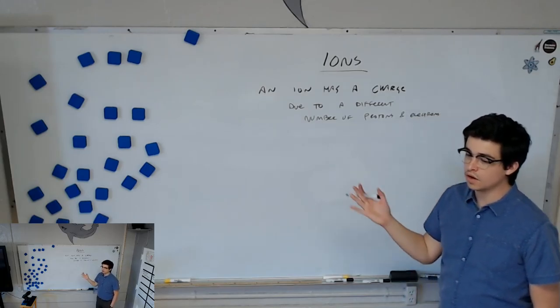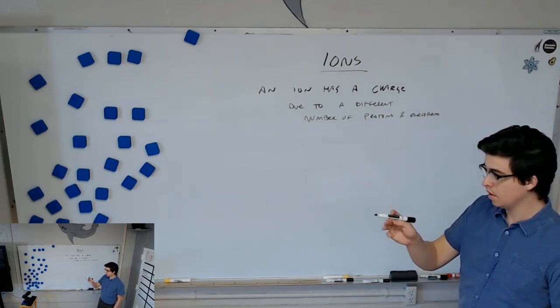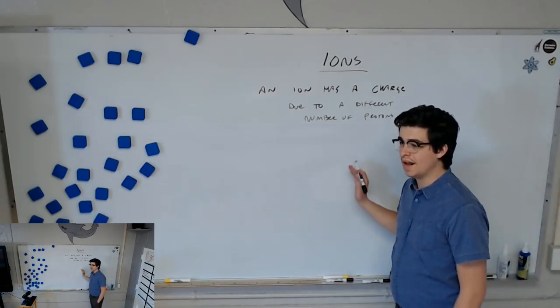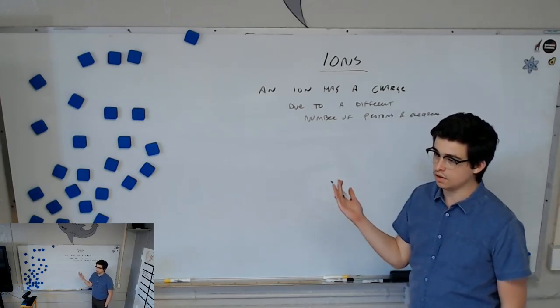These, when they are ions, they are no longer considered atoms. You should write this down. We've already talked about it in the past, but an atom must be neutral. If it's not neutral, it's called an ion.